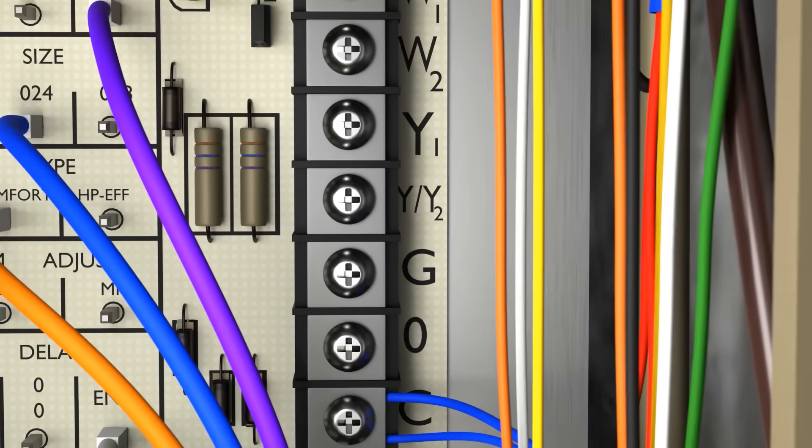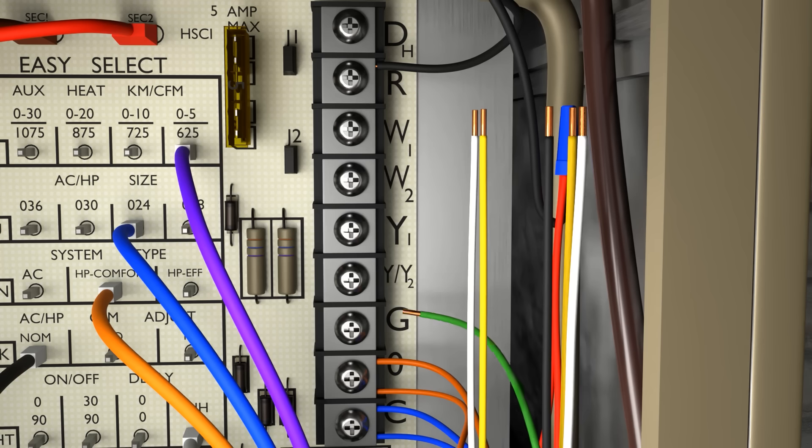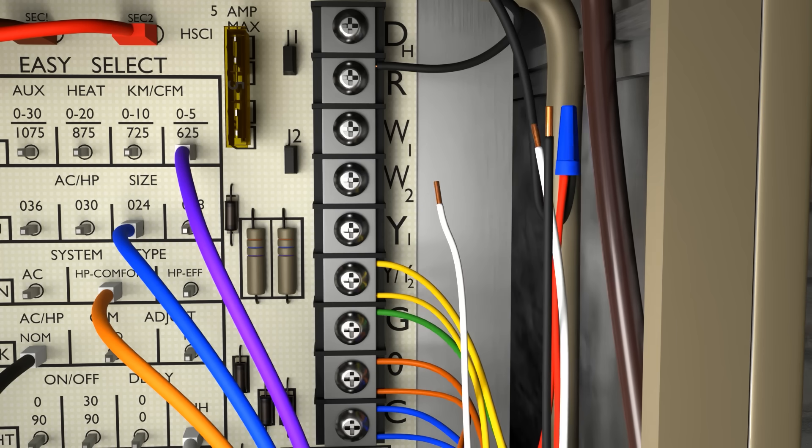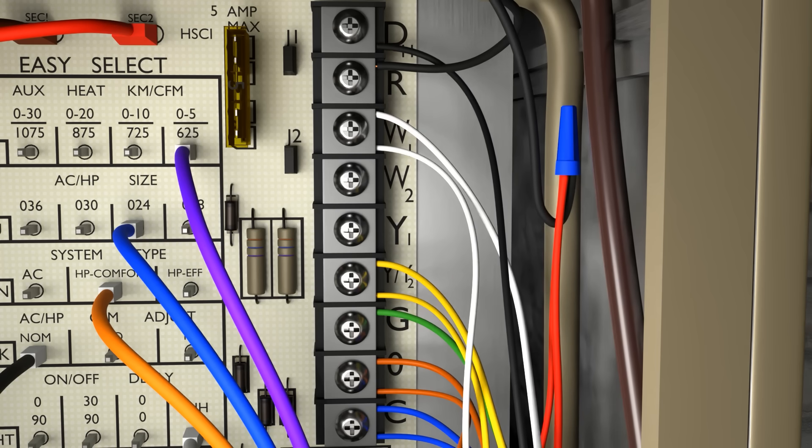Common, O for reversing valve, G for blower, Y for contactor, W for electric heat, and DH for dehumidification.